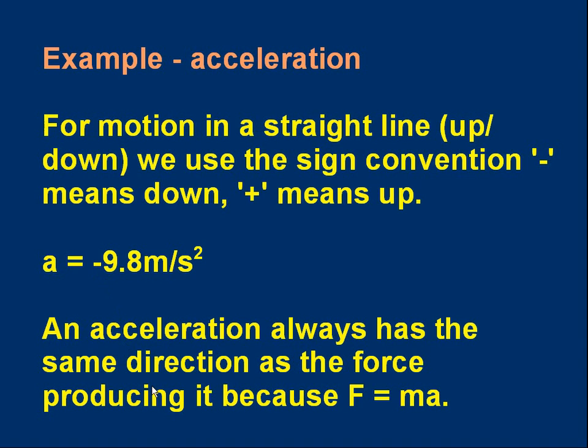And if you want to know the direction, here's the way to work it out. An acceleration always has the same direction as the force producing it because F equals ma. Whatever the direction of F is, the acceleration has the same direction. If you have a freely falling object with no air resistance, the only force on it is its weight, pulling it downwards. Therefore, the acceleration you can calculate from that equation.